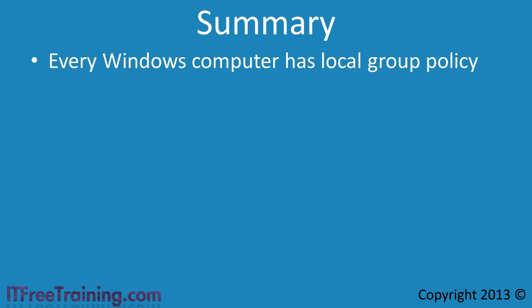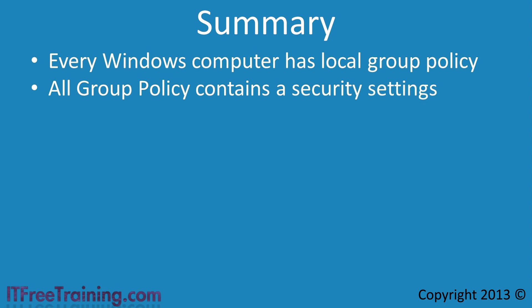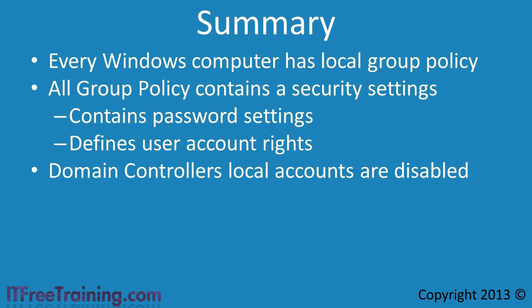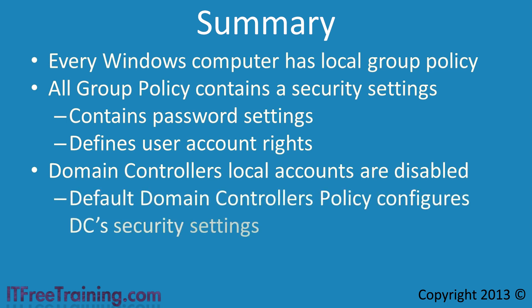There have been a lot of points covered in this video, so here is a quick summary of the major points. Every Windows computer has a local group policy, and inside this group policy are settings that configure how local security on the computer works — for example, when passwords will expire for user accounts, and rights that users will have, such as the right to backup files. Since a domain controller has the local user account database disabled and can only use domain user accounts, the security settings in the local group policy on a domain controller have no effect. For this reason, an additional group policy called Default Domain Controller Policy is created when the domain is created, to ensure domain controllers have security settings applied that will work with domain accounts.